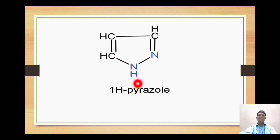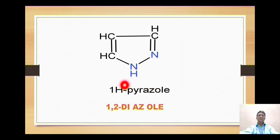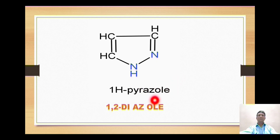This is called 1H-pyrazole because the nitrogen at position one bears the NH hydrogen. In IUPAC nomenclature it is also called 1,2-diazole — 1 and 2 represent the positions of the two nitrogens. Since two nitrogens are present, we use the prefix 'di', and for nitrogen we use the prefix 'az', giving 'diazole', and for a five-membered ring we use the suffix 'ole', so it becomes diazole.